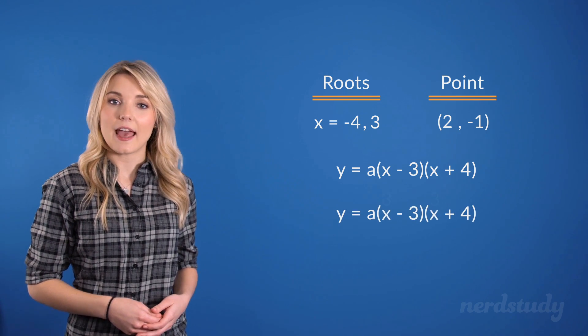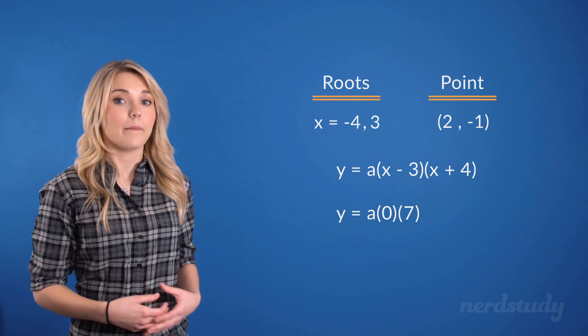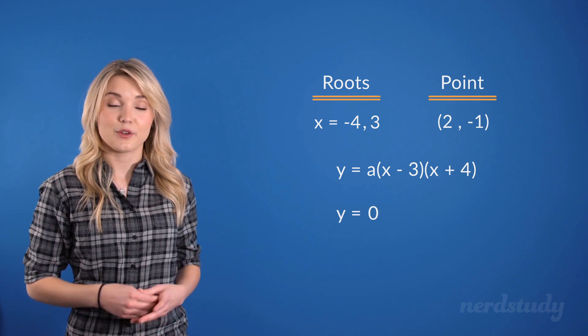Notice how when we let x equal 3, this here equals to 0, and since these are being multiplied by 0, we'd be getting a y equals 0 situation. Great!